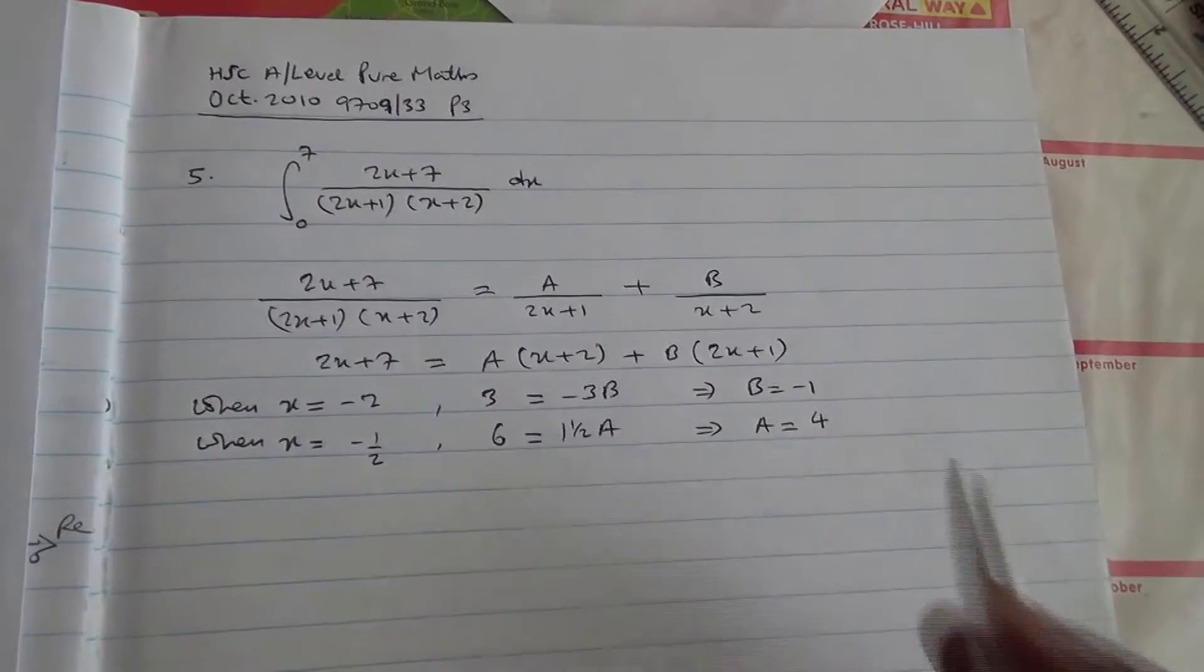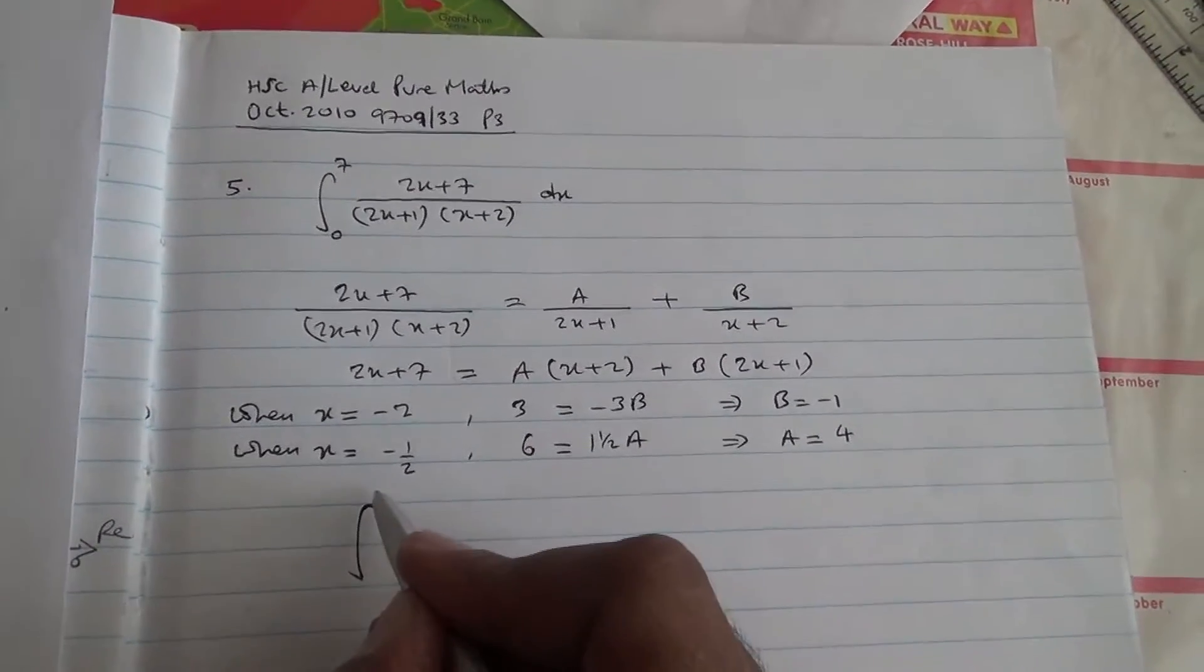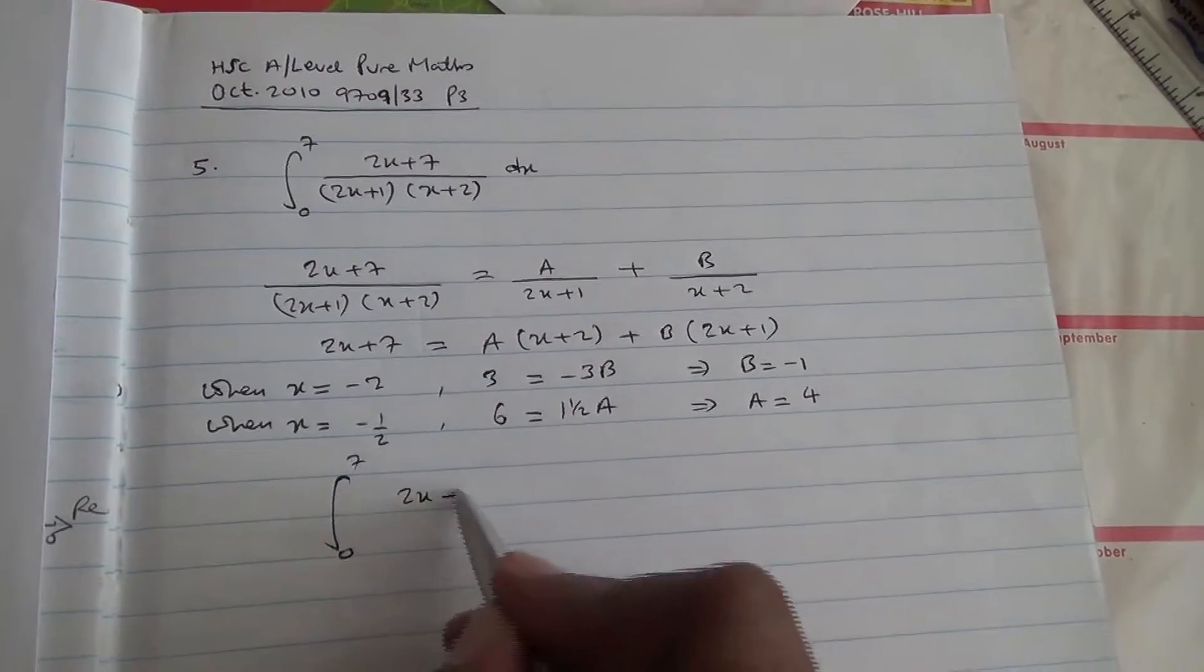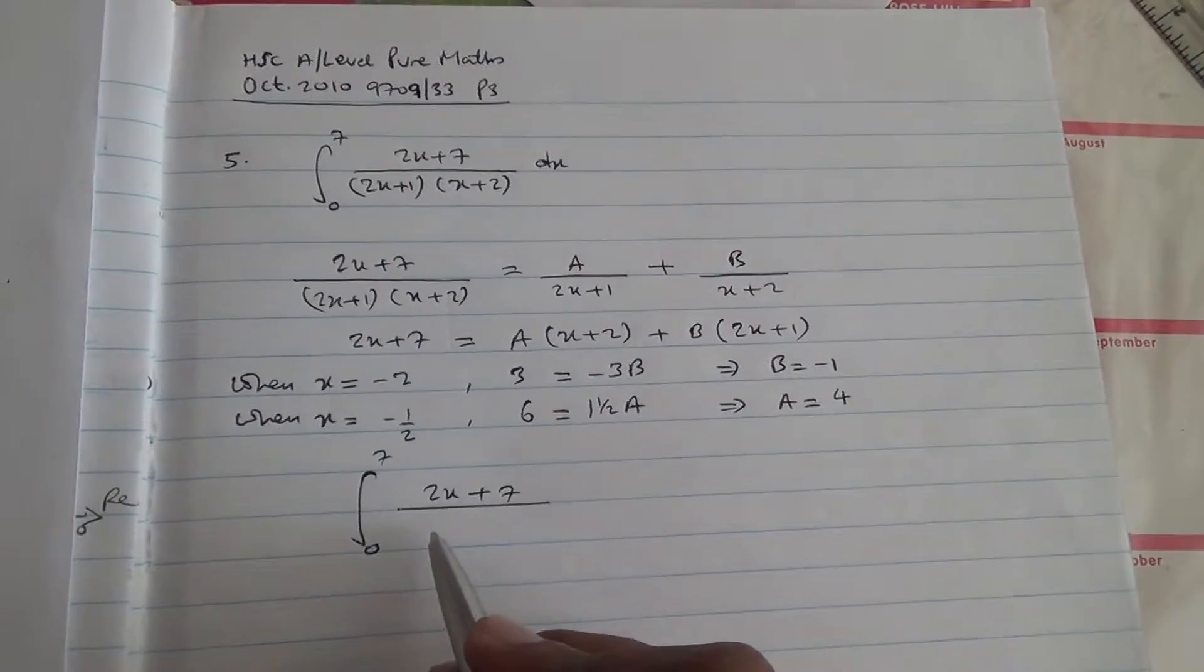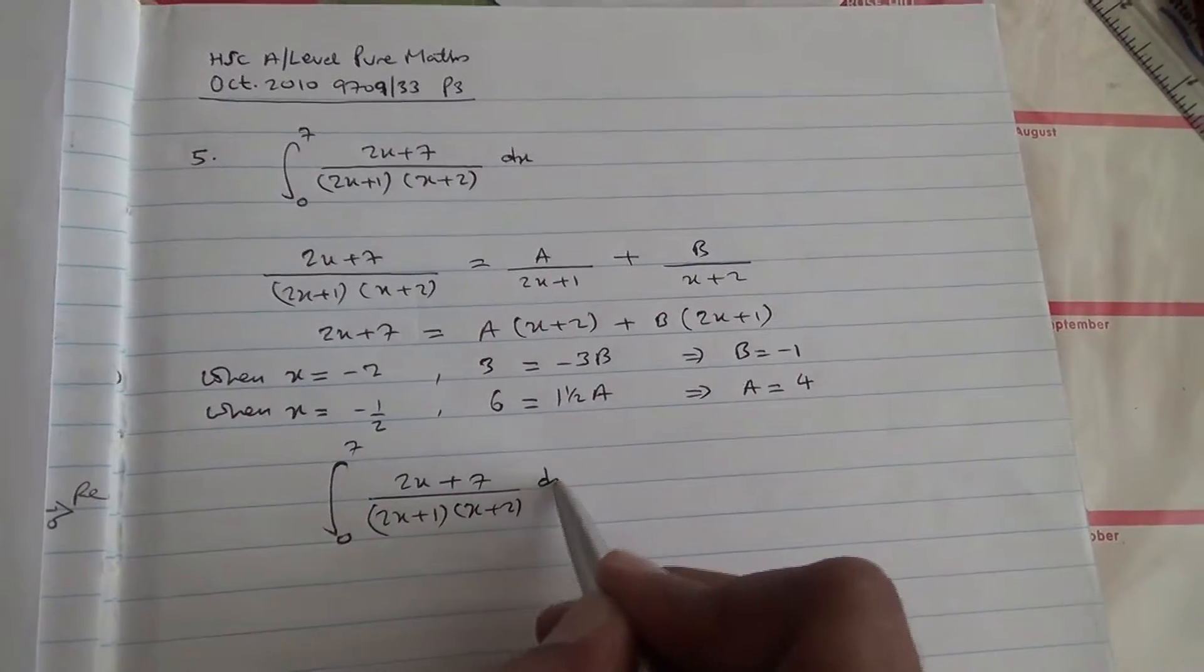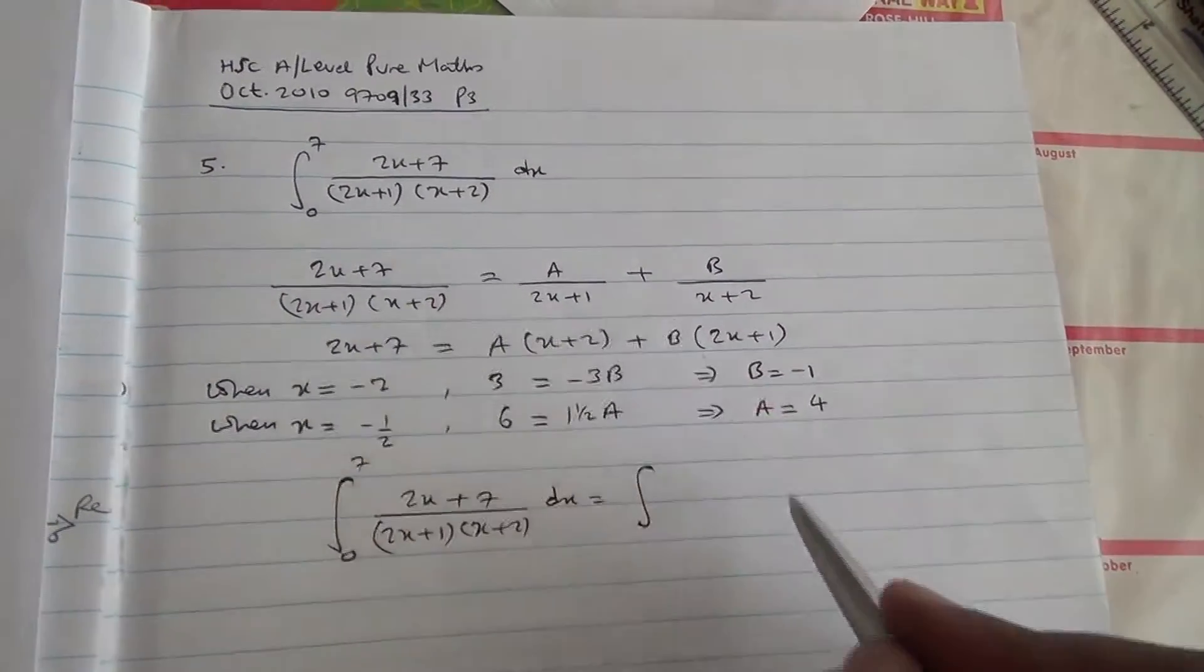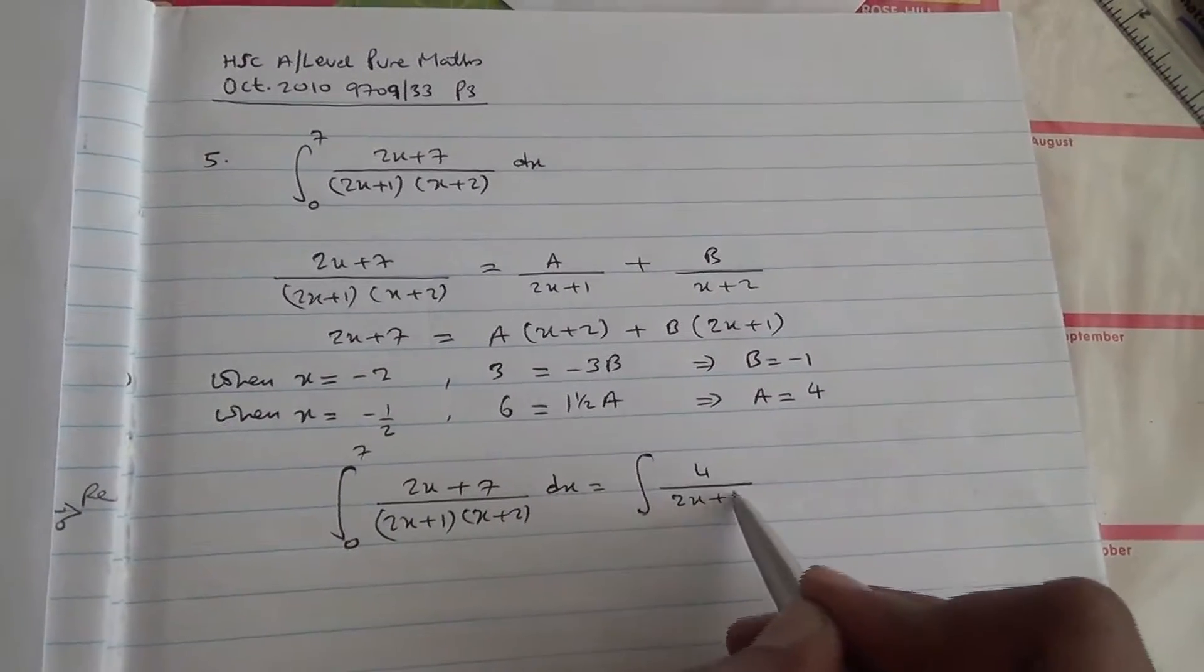Right, you can do that on your calculator, and therefore, now we are ready to integrate. So 7, 0, and I've got 2x plus 7, all over, 2x plus 1 times x plus 2 dx, that's going to be exactly the integral of a over 2x plus 1, and a is 4 over 2x plus 1 dx.